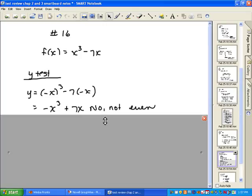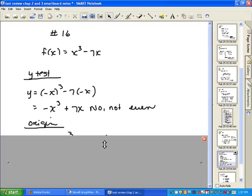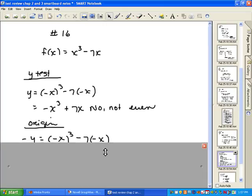So we go to our next test. If this one had been even, we would stop because something cannot be both even and odd. The test for odd is symmetric about the origin. When you do that test, you change all the y's to negative y's and all the x's to negative x's. So that's what I've done here. Then you do the math.